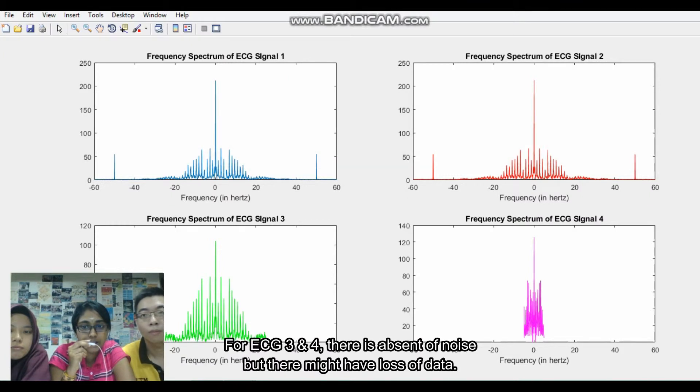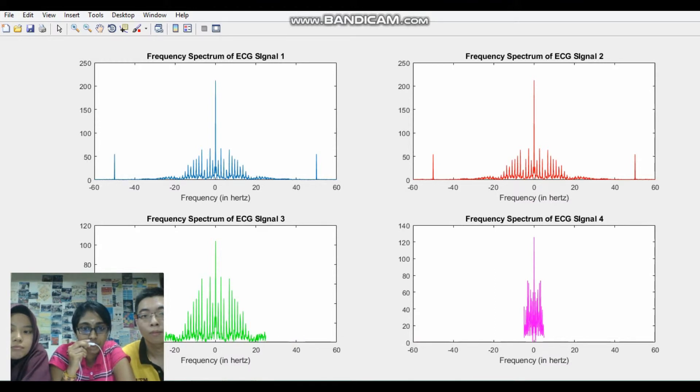For the ECG signal 3 and ECG signal 4, there is absence of noise. But then, there might have loss of data. We can see that the data is not fully occupied.